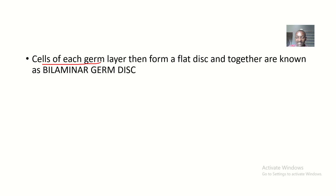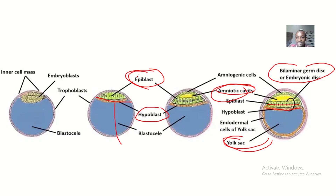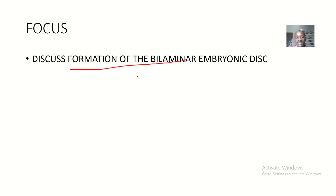Cells of these two germ layers come together to form a flat disc. Since they originate from two germ layers forming a flat disc together, they are collectively called the bilaminar germ disc or embryonic disc. That is basically the formation of the bilaminar embryonic disc. Hope you enjoyed this tutorial — bye for now.